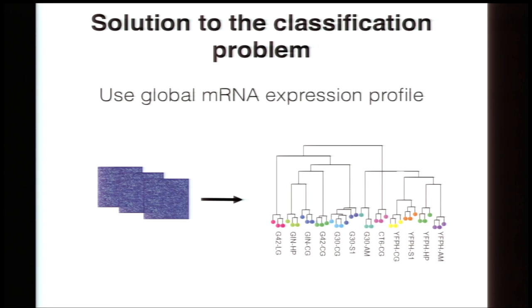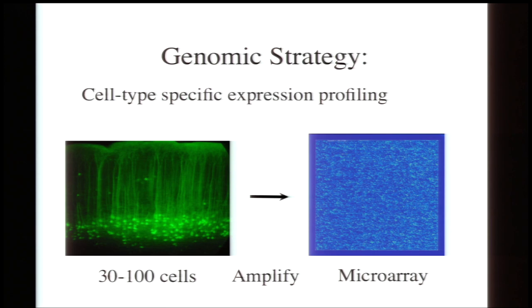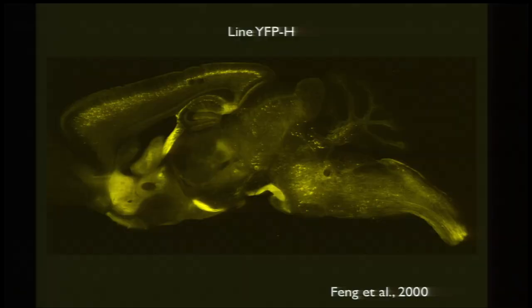To that end, for a number of years we've been isolating individual cell types using a manual sorting technique that we developed, and probing their gene expression using microarrays. When we started this work, the array of available transgenic animals was much poorer than it is now.